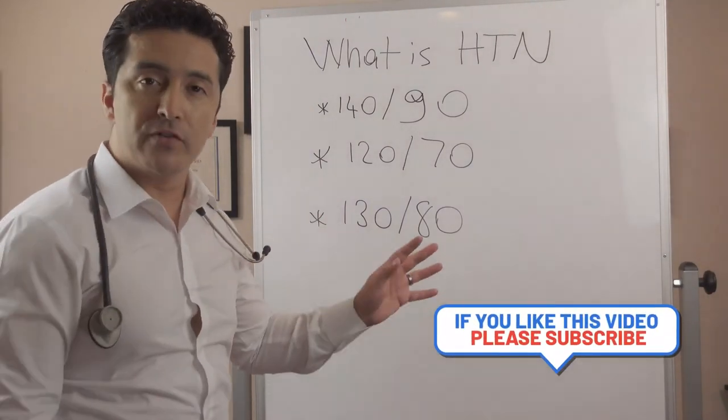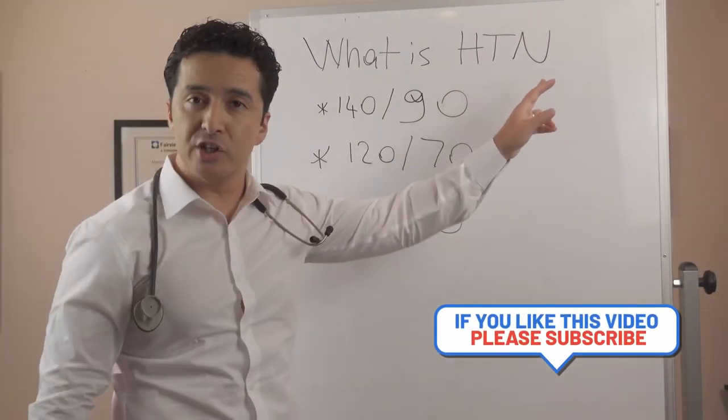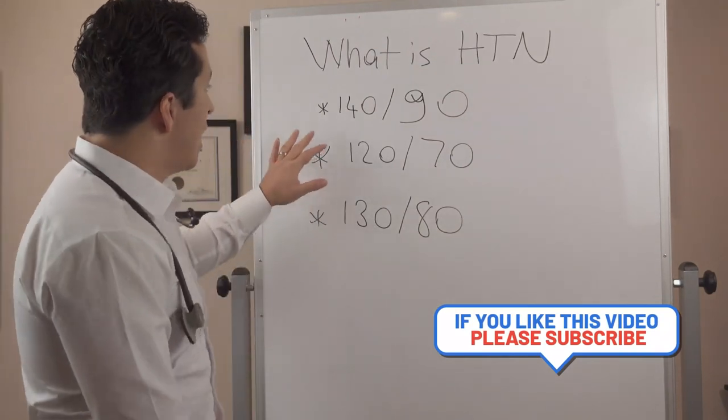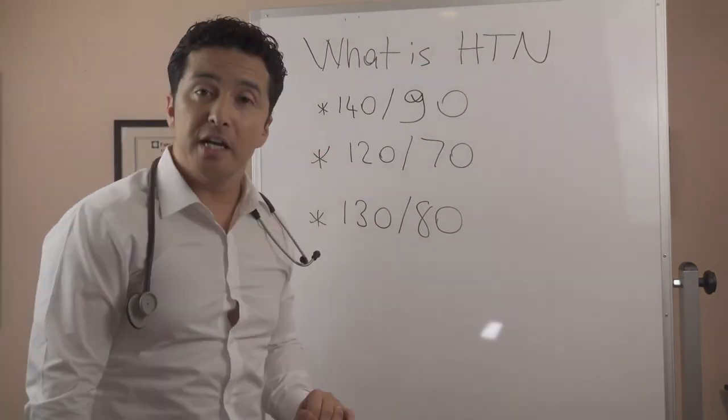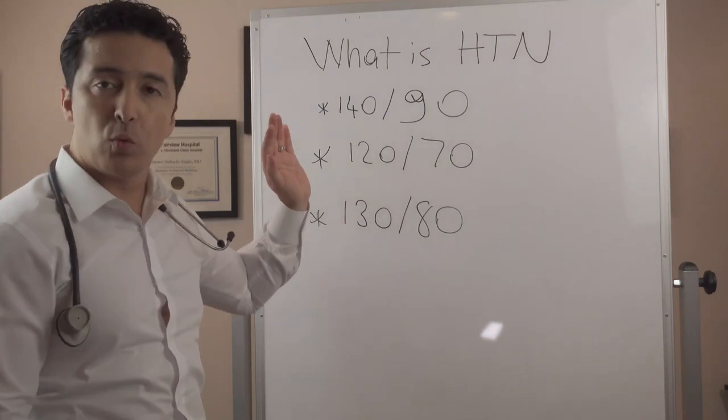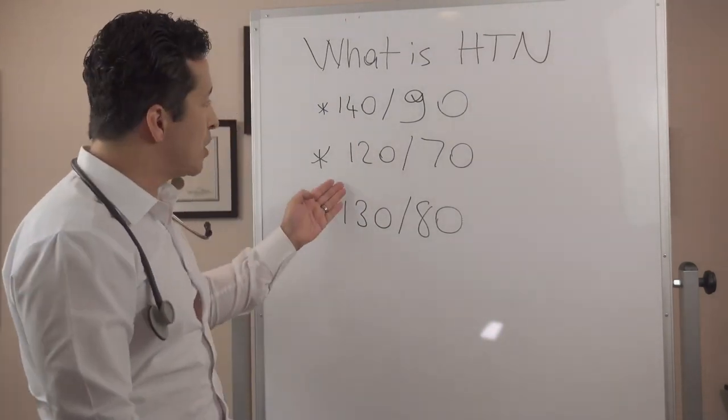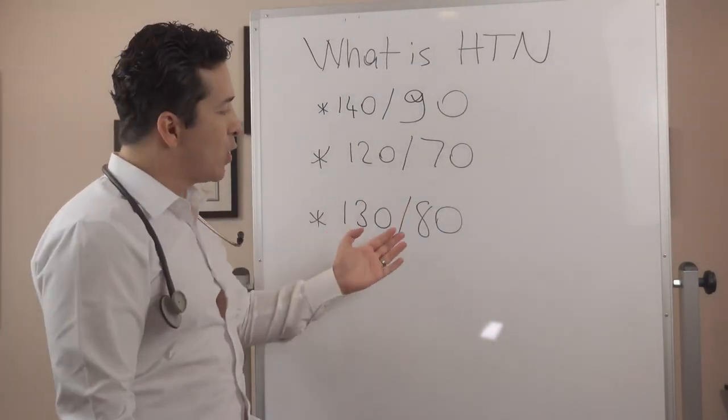Let's talk about the definition of high blood pressure, which is hypertension. So you can hear three different things: Is it 140 over 90? Is it 120 over 70? Is it 130 over 80?